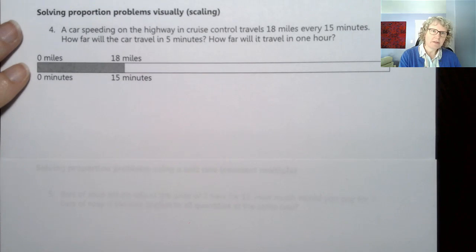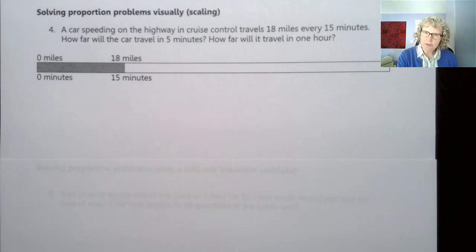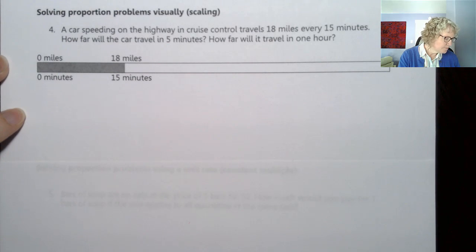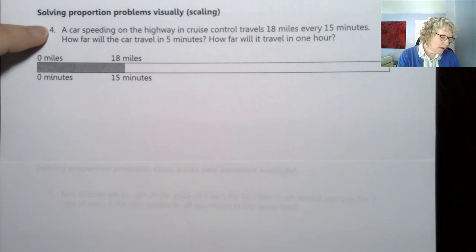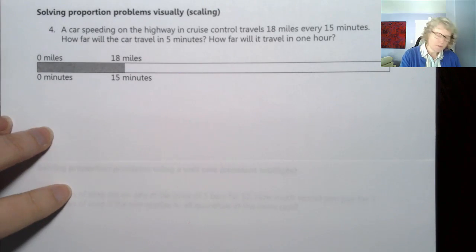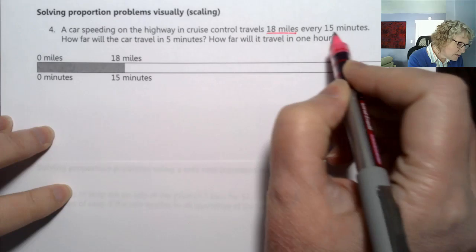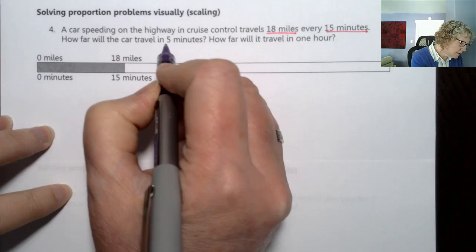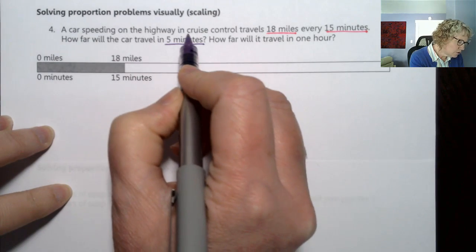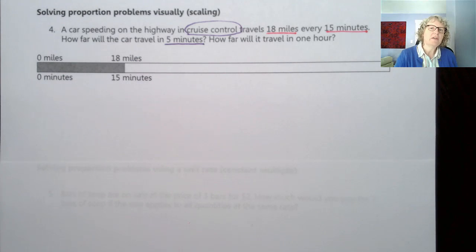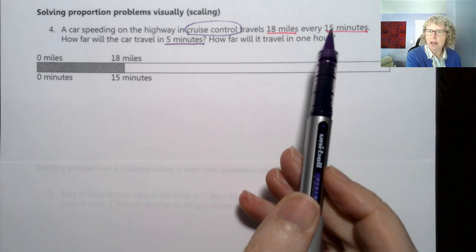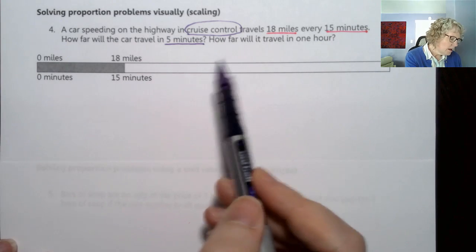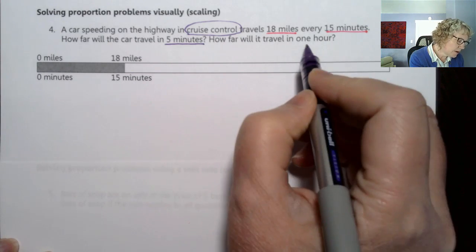The first method is visual or called scaling. If you're visual like me this might be really helpful. A car speeding on the highway in cruise control travels 18 miles every 15 minutes. Notice they're telling us it's in cruise control, so that's a way of saying we have a constant speed, so these quantities should be proportional. We're not speeding up and slowing down.